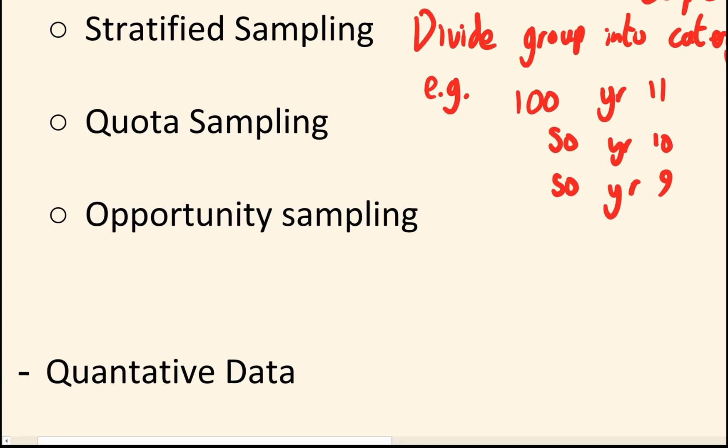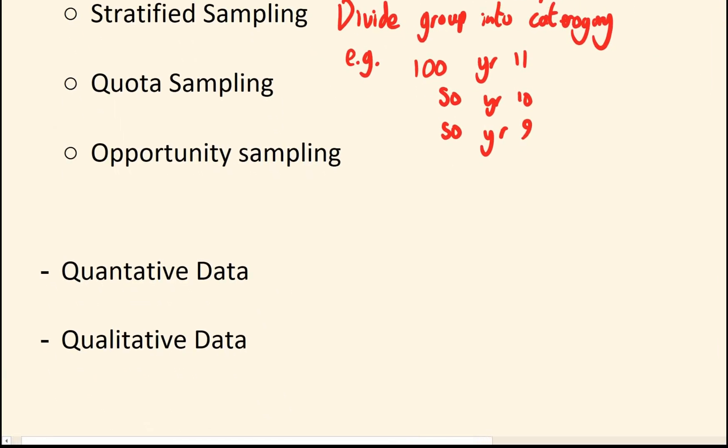This brings us nicely to quota sampling. Quota sampling is roughly the same thing. So what you might say for quota sampling is I want 50 men and 50 women. However, the downside of this is it might be a company where there's a thousand men but only 300 women.